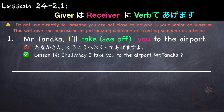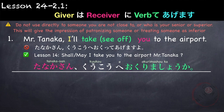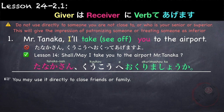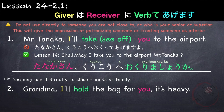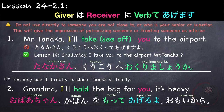Instead, use the pattern from Lesson 14 — shall I or may I — to offer. For example: Tanaka-san, koukou e, okutte agemasu ka. However, you may use verb-te agemasu directly with close friends or family. For example, offering grandma help: Obaachan, kaban wo motte ageru yo, omoi kara.